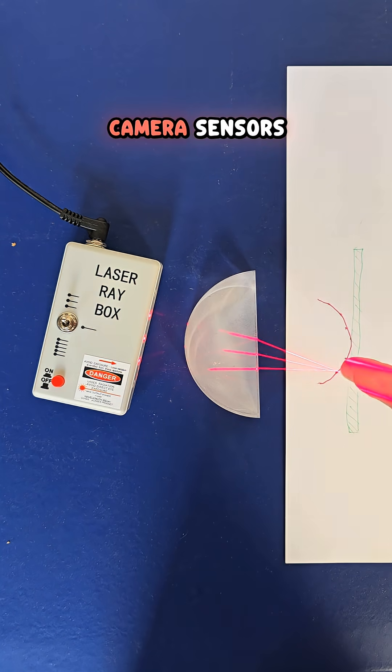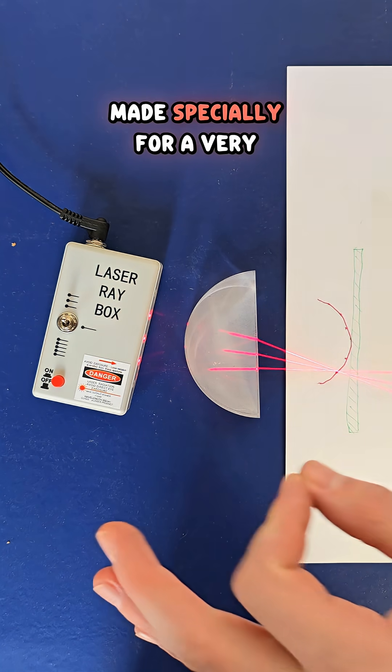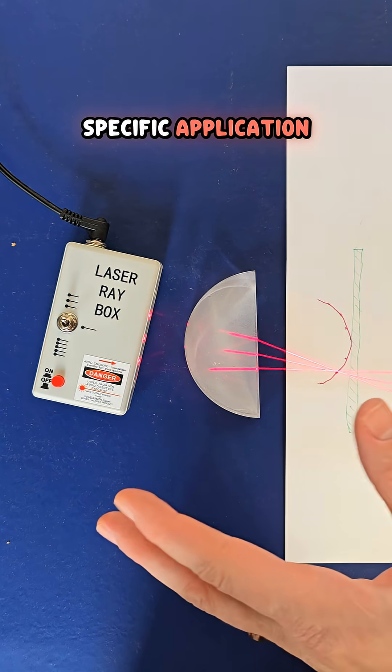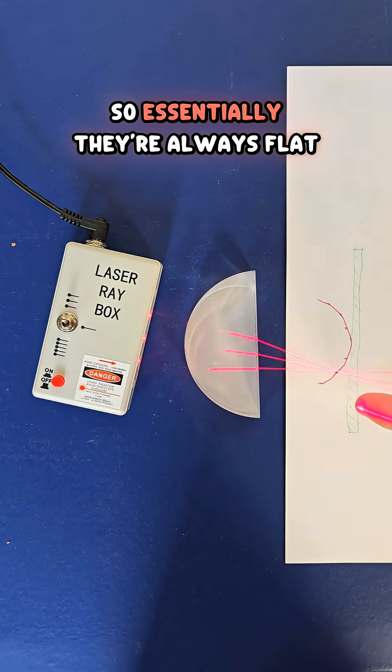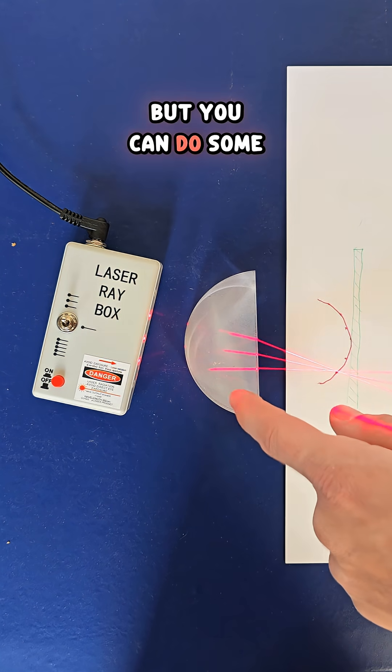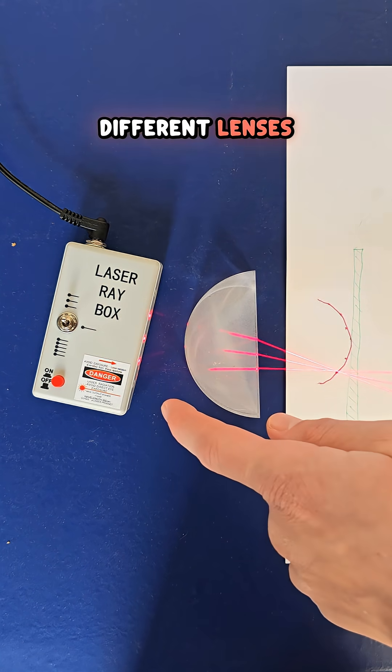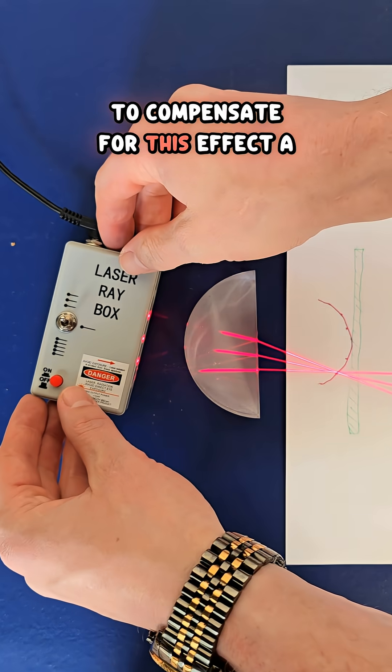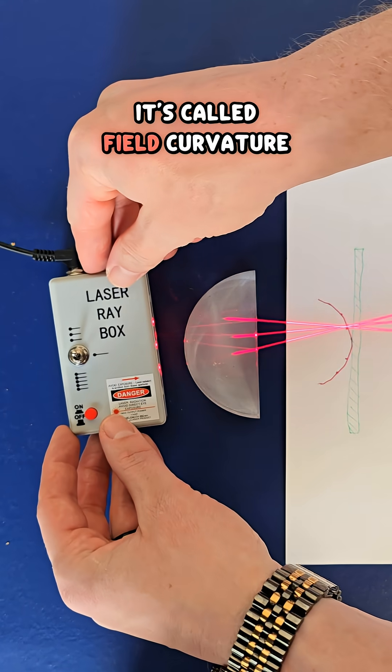It's possible to make curved camera sensors, but they have to be made especially for a very specific application and they're much harder to make. So essentially, they're always flat. But you can do some clever tricks in how you combine different lenses to compensate for this effect a little bit. It's called field curvature.